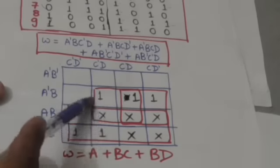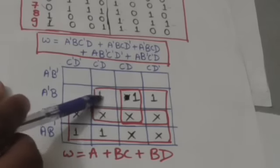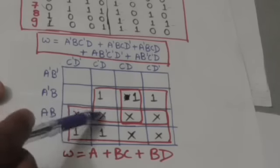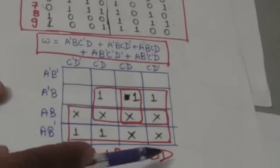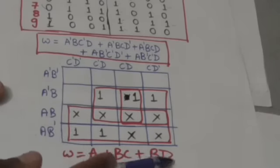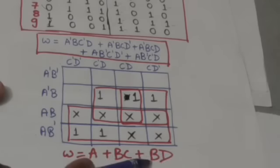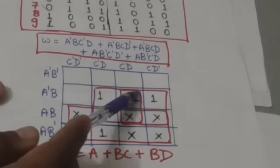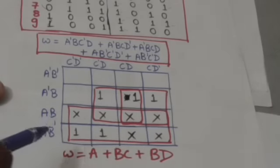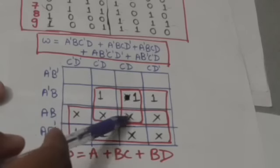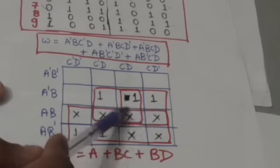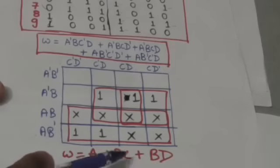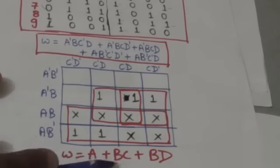One group has eight squares, and the variable common in all eight squares is A, so the term A is included in the simplified boolean function W. Another group has four squares where the common variables are B and D, so the term BD is also included. A third group has four squares where the common variables are B and C, so the term BC is also included in the simplified boolean function W.